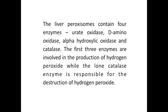The liver peroxisomes contain 4 enzymes: urate oxidase, D-amino oxidase, alpha-hydroxy acid oxidase and catalase. The first three enzymes are involved in the production of hydrogen peroxide while catalase is responsible for the destruction of hydrogen peroxide. Catalase represents 40% of the total protein in peroxisomes. The main source of hydrogen peroxide is the peroxisomes but catalase acts as a safety valve by removing large amounts of hydrogen peroxide generated by peroxisomes. The cytosolic hydrogen peroxide and superoxide anion produced by mitochondria and membranes of endoplasmic reticulum are taken care of by glutathione peroxidase and superoxide dismutase.